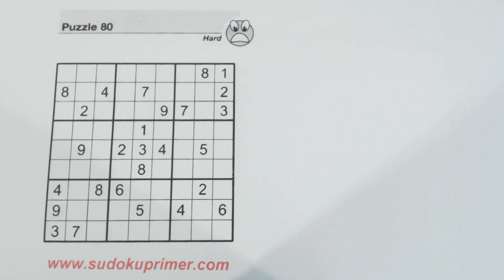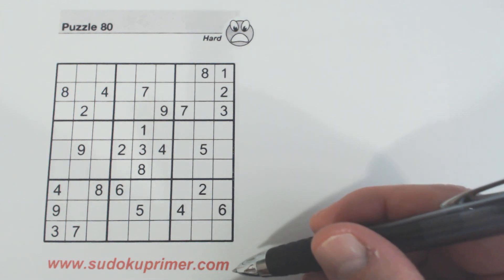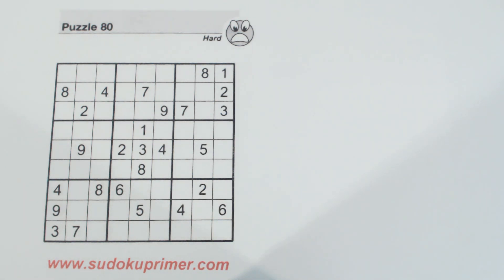In this video we're going to talk about the gate pattern. The gate pattern can help you find where and what row or column a number goes in, and then sometimes it can also help you find where that number goes so you can solve that number. You can go to sudokuprimer.com and in the pattern section there's a write-up about the gate pattern and how it works.